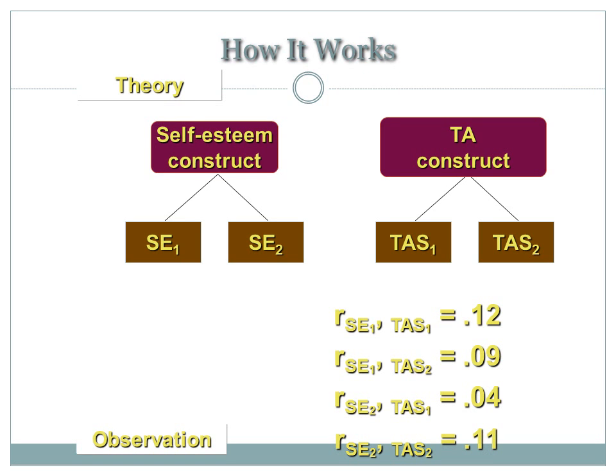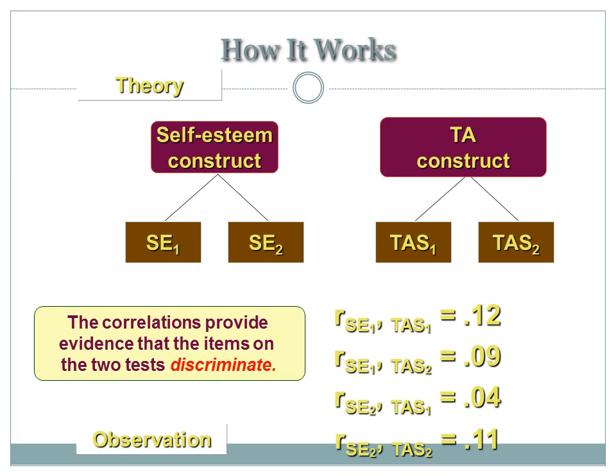Discriminant validity would look something like this: the correlation between SE1 and the first item for test anxiety is 0.12; SE1's correlation with the second test anxiety item is 0.01; SE2's correlation with the first test anxiety item is 0.04; and SE2's correlation with the second test anxiety item is 0.11. These very low correlations — close to 0 rather than 1 — give us evidence of discriminant validity.